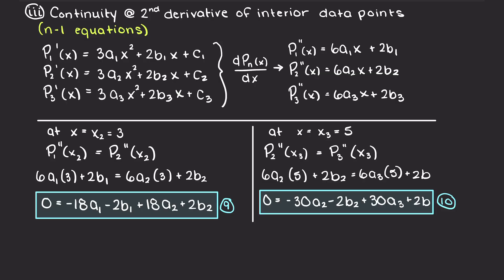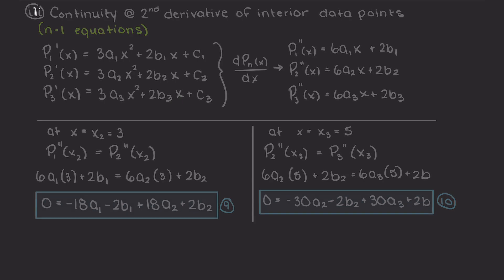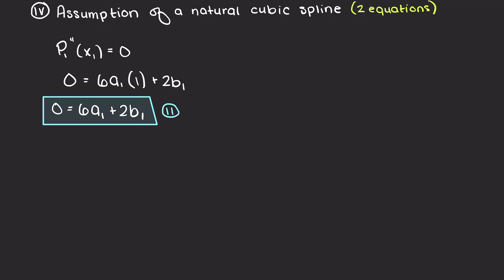Now, as you can see we have 10 equations and we are only missing 2. We were told to assume a natural cubic spline, so let's do that. In a natural cubic spline, we assume that the second derivative of our endpoints are both equal to 0, meaning at that point it is simply a straight line. So, let's just go ahead and calculate the second derivative of P1 and P3 at points x1 and x4 respectively to get our remaining two equations.